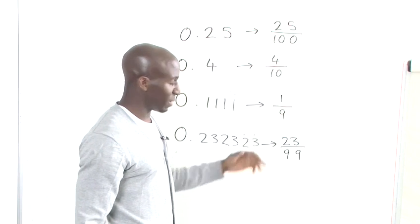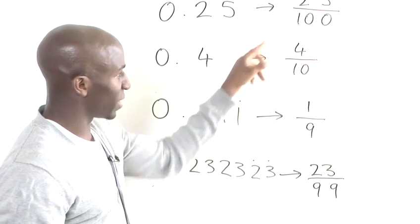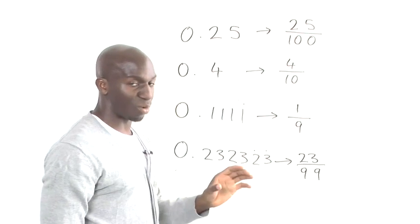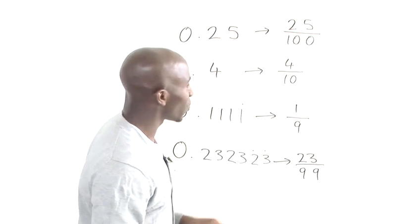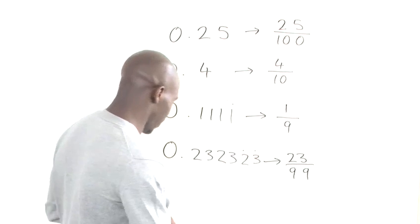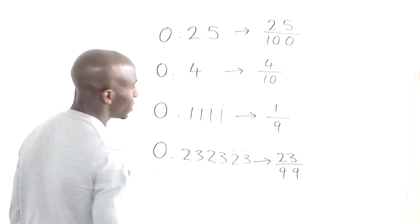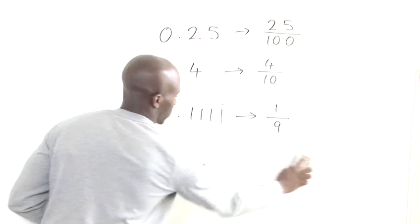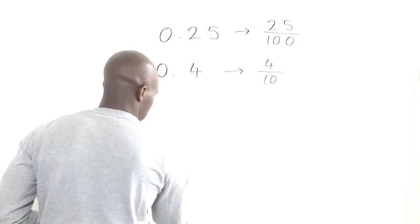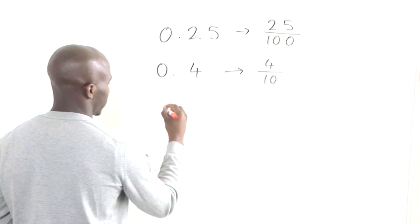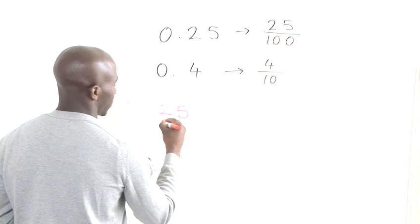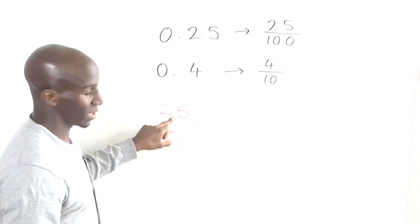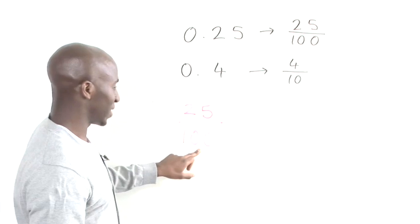If you look at 25 and 100, they actually have more prime factors that can break them down further, so we can simplify these fractions. For 25 divided by 100, we can divide both by 5. Dividing 25 by 5 gives us 5, and dividing 100 by 5 gives us 20.